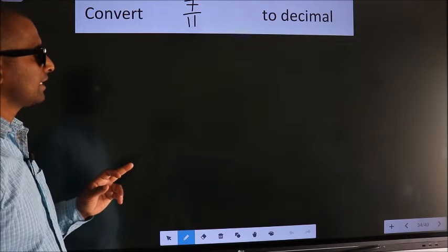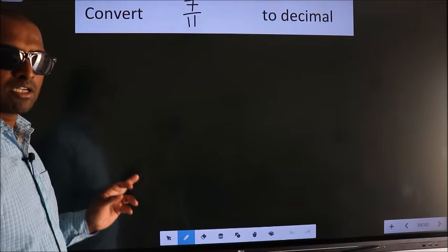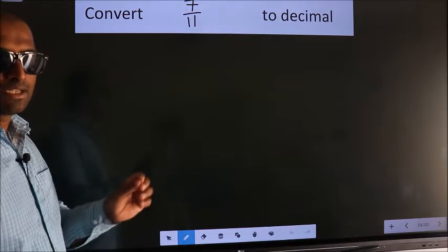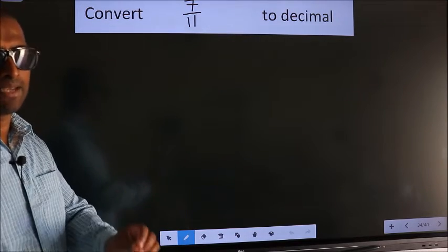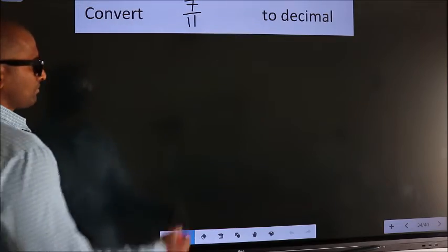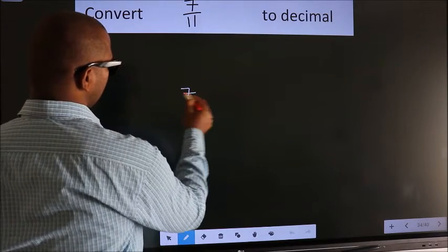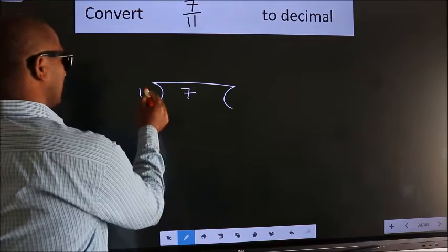Convert 7 by 11 to decimal. To convert this to decimal, we have to divide. And to divide, we should frame it in this way. 7 here, 11 here.